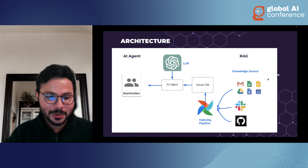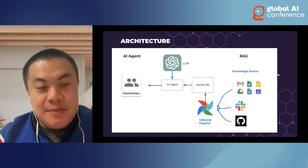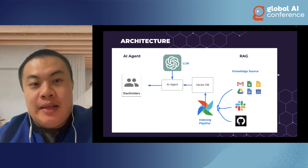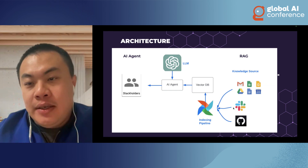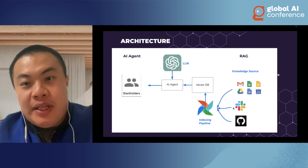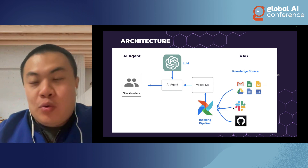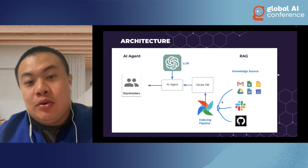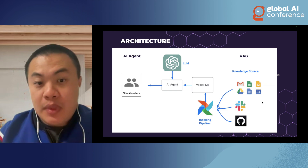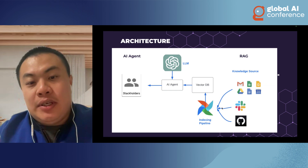Now I'll hand it over to Jing, who will go over the architecture and the future for data engineering. Thanks, Mitesh. I'm going to talk about how we solve the data engineer on-call issue with large language models. Here is the high-level architecture — there are two major components in our system. The first is RAG, as Mitesh explained, and the other is an AI agent. We use the index pipeline to collect all internal knowledge and feed it to the vector database.